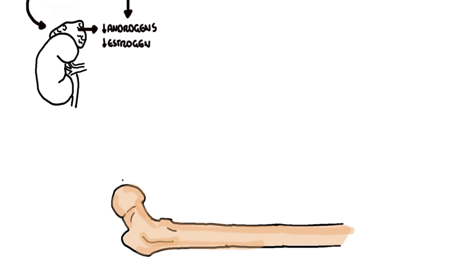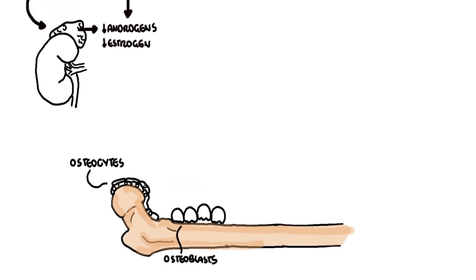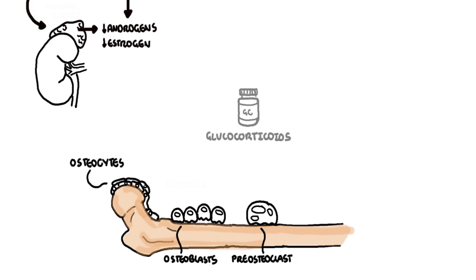Your bones contain three main types of cells: osteocytes, which will essentially become osteoblasts; osteoblasts, the bone-building cells; and osteoclasts — in this case, immature osteoclasts termed pre-osteoclasts.